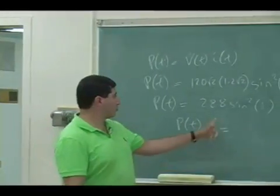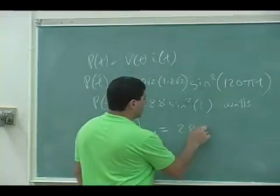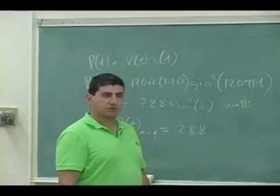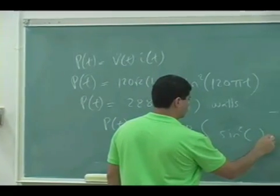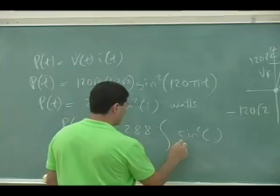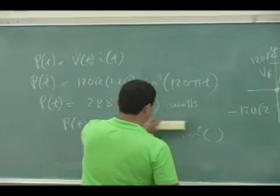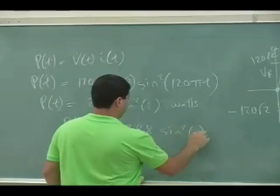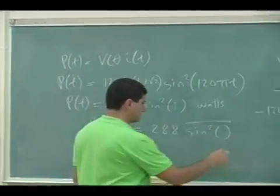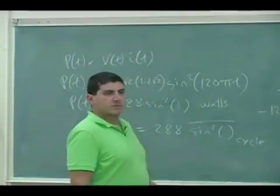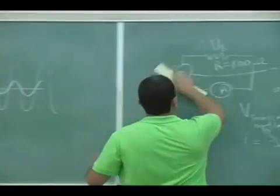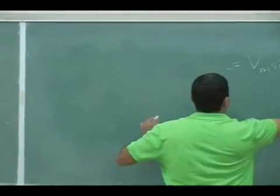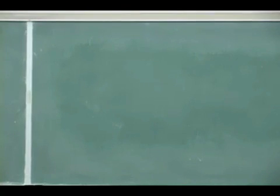How would I find the average power? Well, I need to do 288 times the average of the sine squared function over one cycle. So here's a result we can borrow from calculus. What is the average of the sine squared function? Anyone remember doing that or doing something like that?